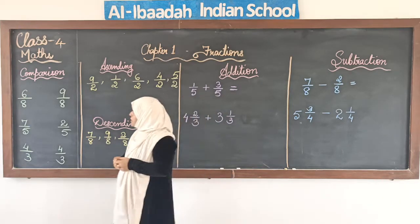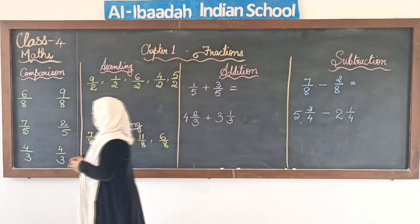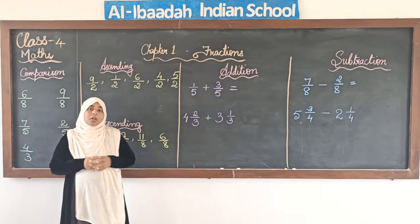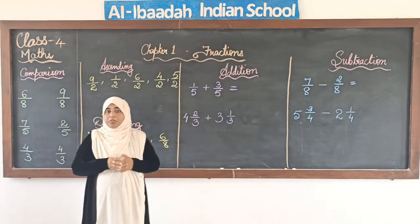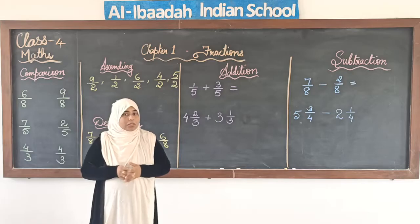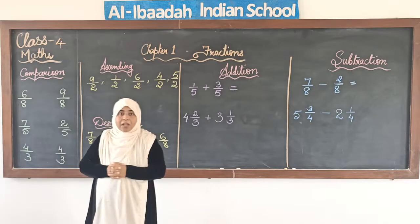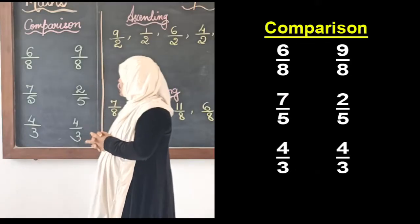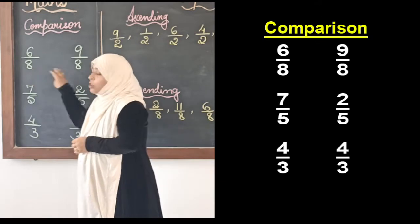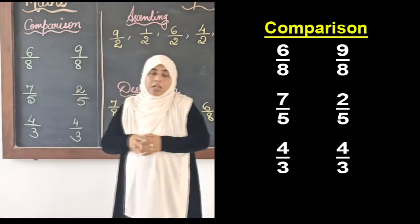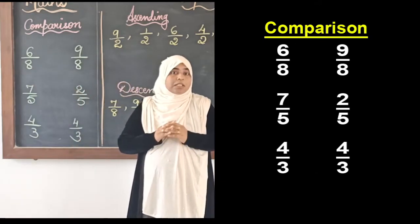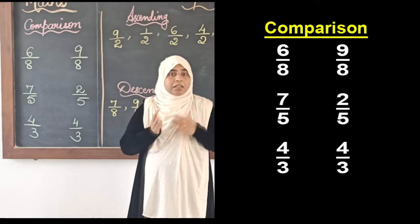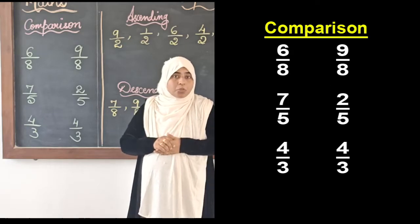The first thing we are going to do is comparison. Comparison means we check which fraction is greater and which fraction is smaller. Now in like fractions, since we have the same denominators, we only need to compare the numerators to find out which is greater and which is smaller.